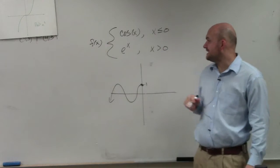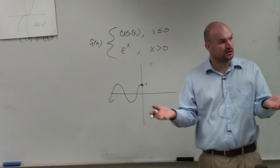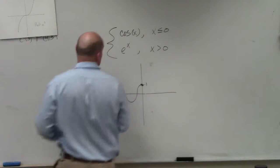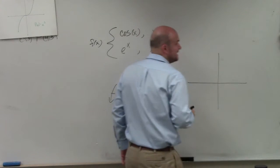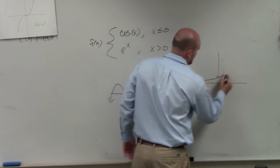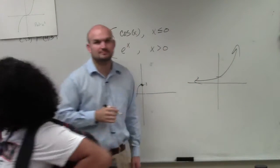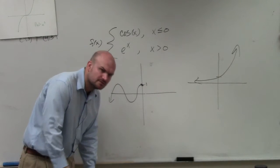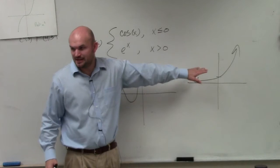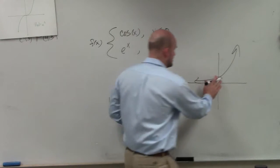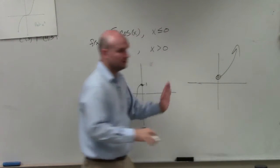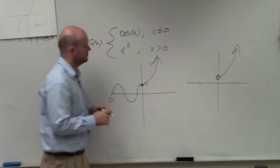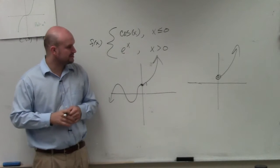And then we have e to the x, where x is greater than 0. Now remember, that's an open circle. But if you look at e to the x, the graph looks like this. So e to the x — if I'm graphing it for greater than 0, it would be an open circle looking like that. But since I already have a point here, I don't actually have an open circle, but it just looks something like that.